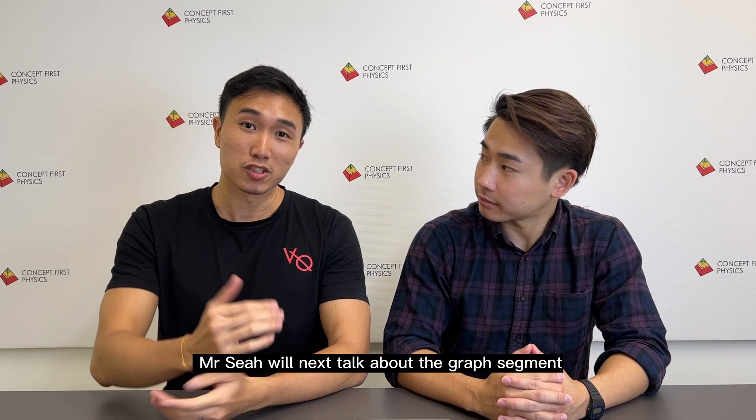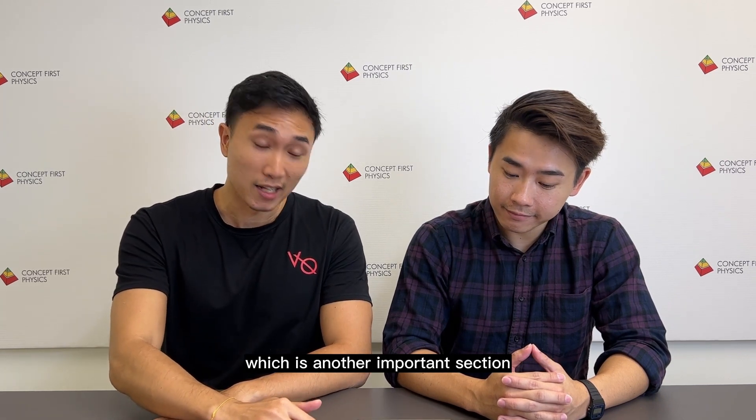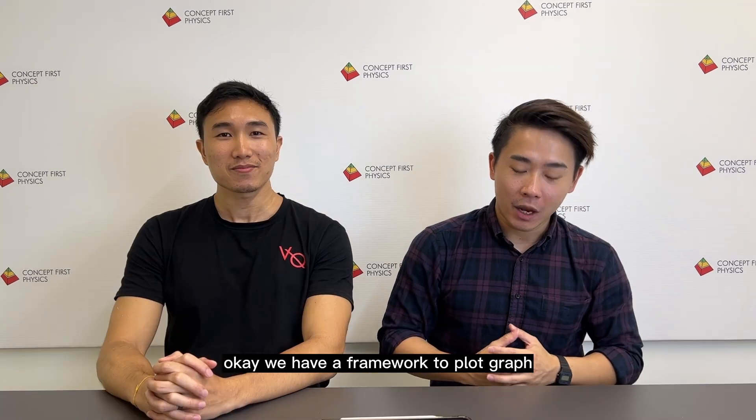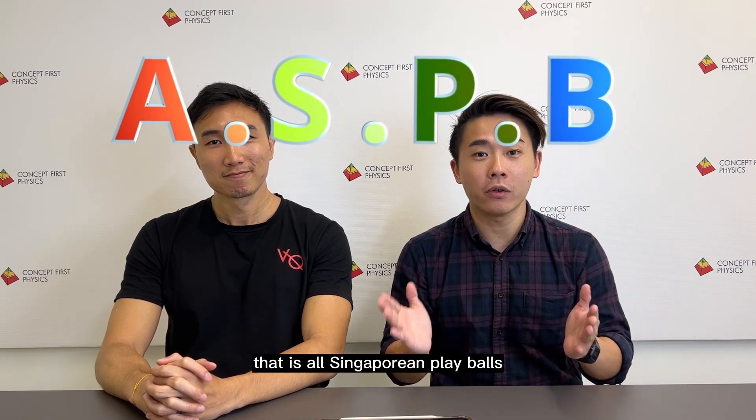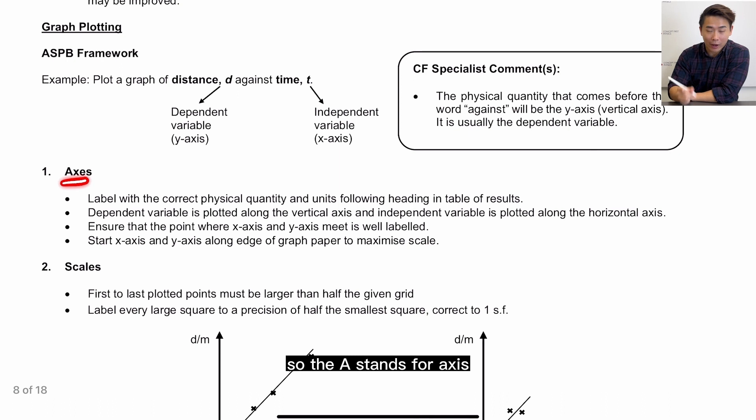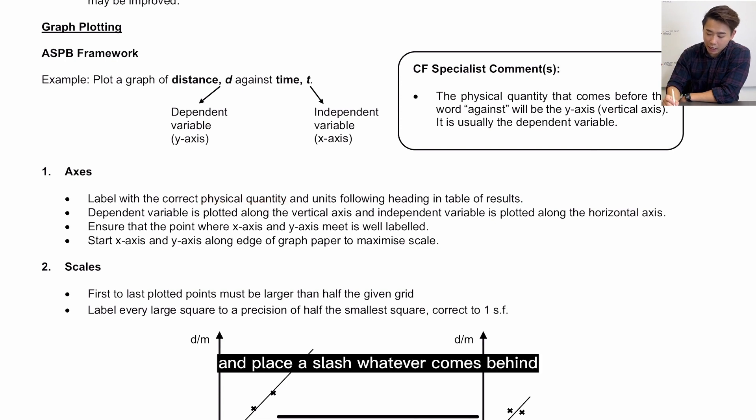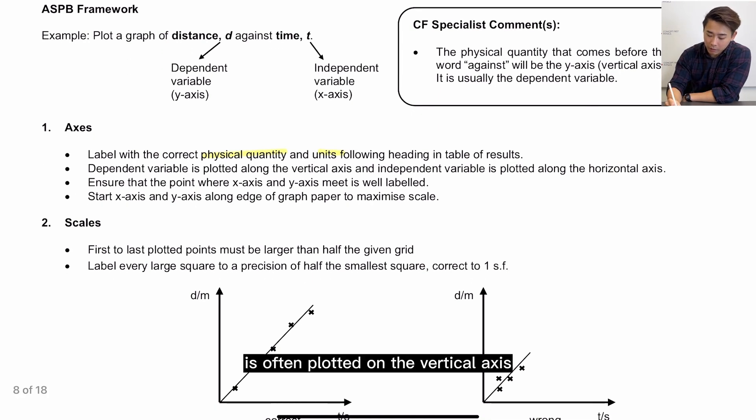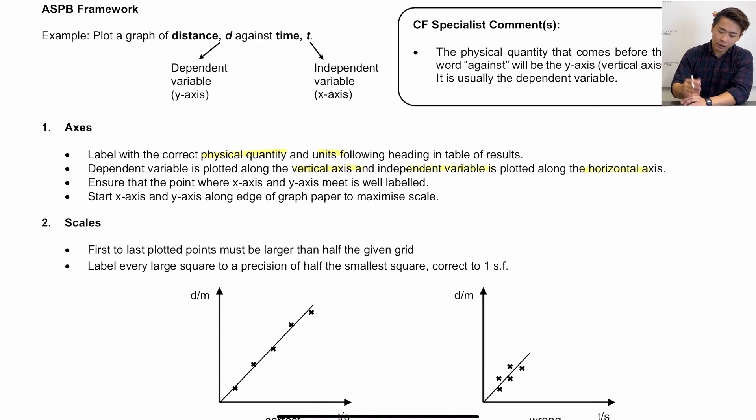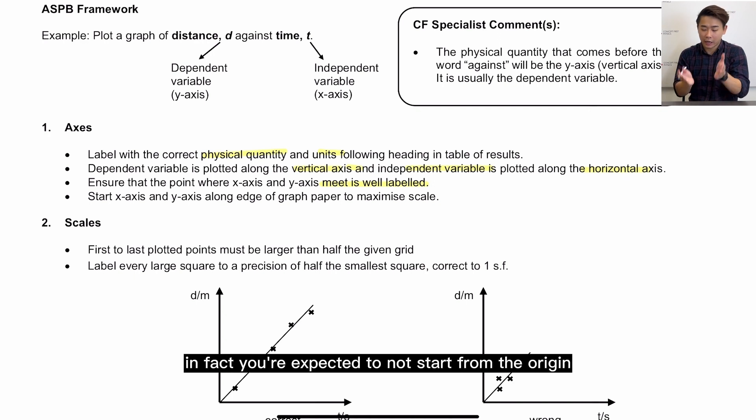Okay, moving on, Mr. Siao will next talk about the graph segment which is another important section that you should be paying attention. Okay, we have a framework to plot graph, it is called ASPB, and a simple way to memorize that is All Singaporeans Play Balls. So the A stands for axis. So for your axis, you always need to make sure you have the physical quantity and place a slash. Whatever comes behind the slash will be labeled as the units. Then the dependent variable is often plotted on the vertical axis. The independent variable is plotted along the horizontal axis. Now ensure that the points where your x and y axis meet is well labeled. This might not have to be the origin. In fact, you are expected to not start from the origin so that you can maximize the range.